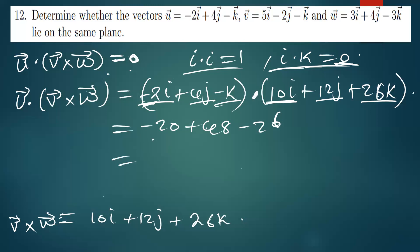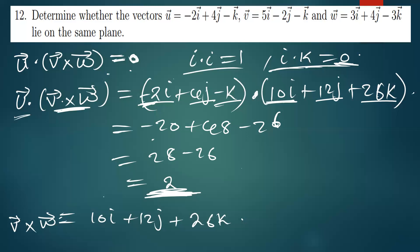So negative 20 plus 48 gives us 28, and then we have negative 26. Subtracting, we get 2 as the answer. This tells us that the three vectors do not lie on the same plane. If our multiplication in finding the cross product and dotting was correct and this is the answer, then the three vectors u, v, and w are not lying on the same plane.